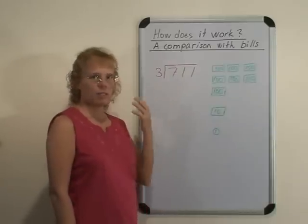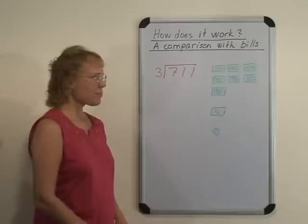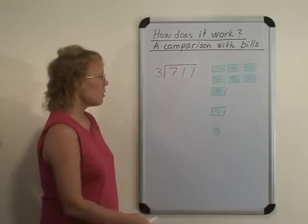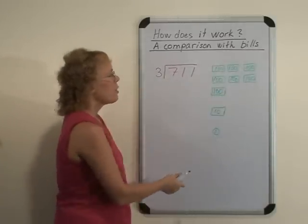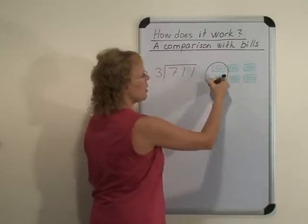Dividing by three means that we have three people that are trying to divide this amount of money evenly. Starting out with the hundreds, three people can't divide these hundred dollar bills evenly, but each one of them can get 200.